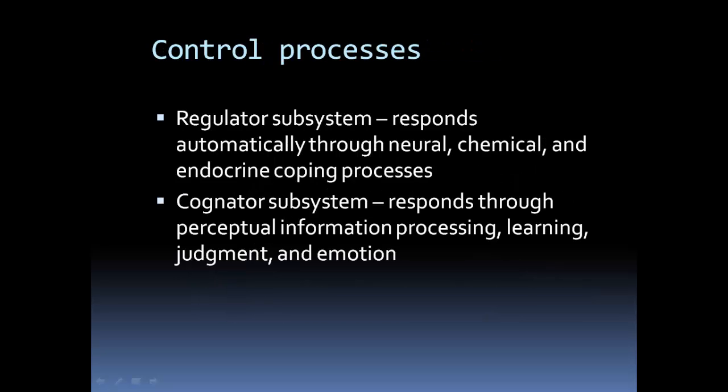The control processes include two subsystems. The regulator system is the body itself — how it responds automatically and maintains homeostasis. The cognator is more the mind: perceiving, learning, making judgments, and emotions.